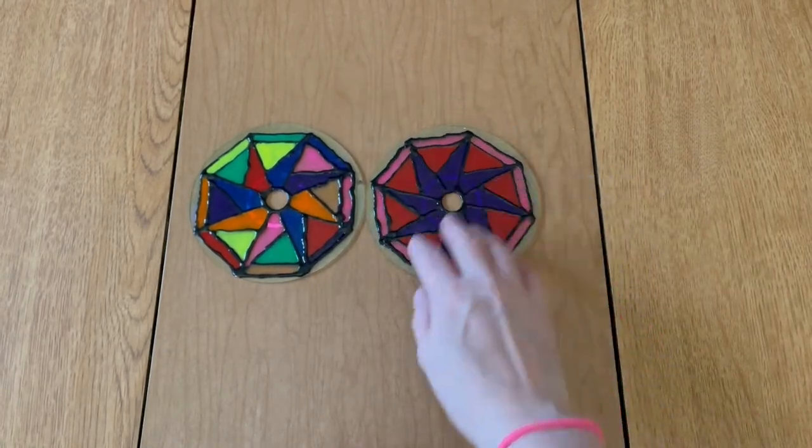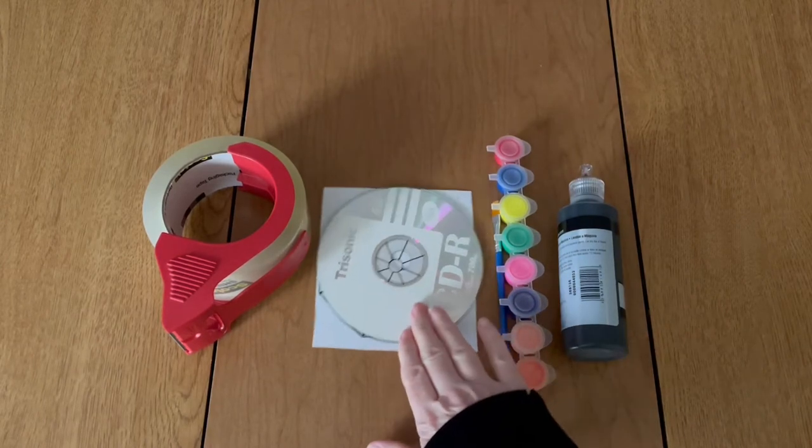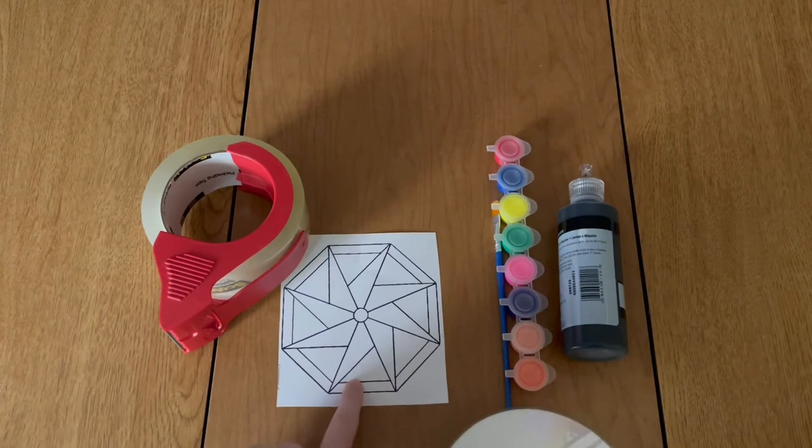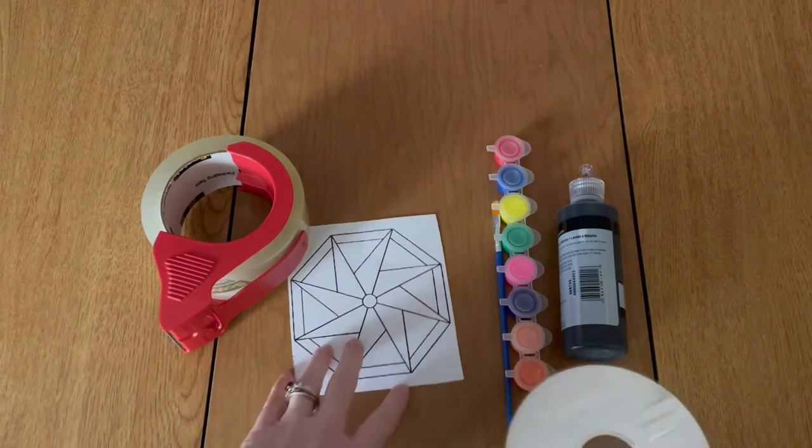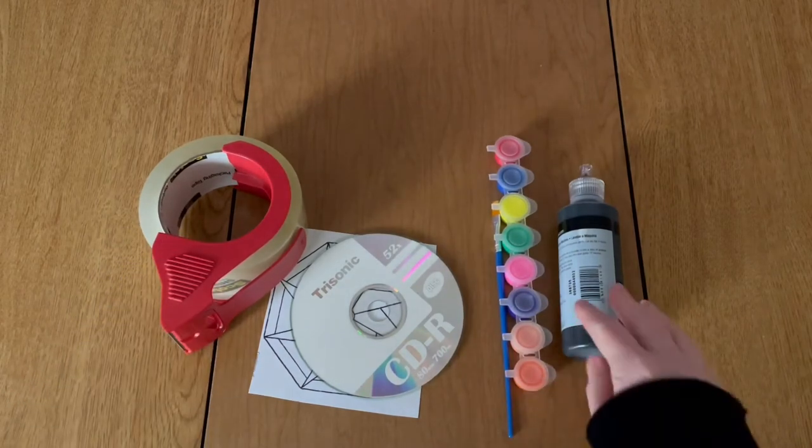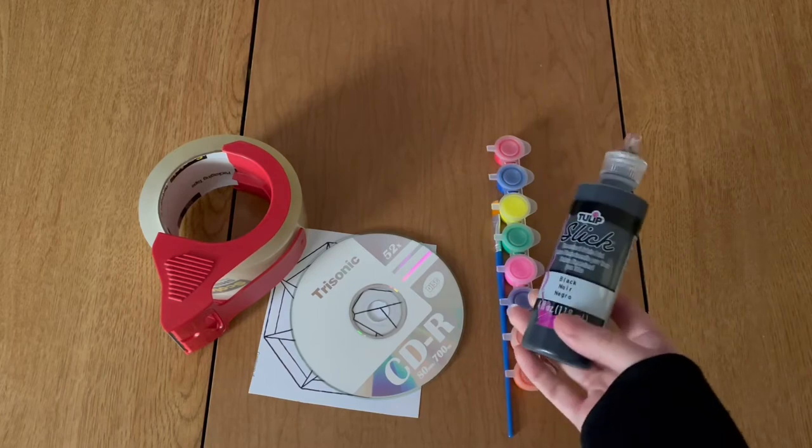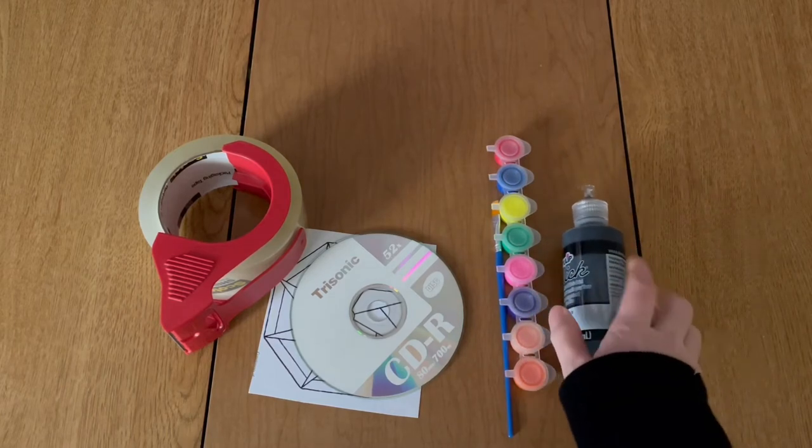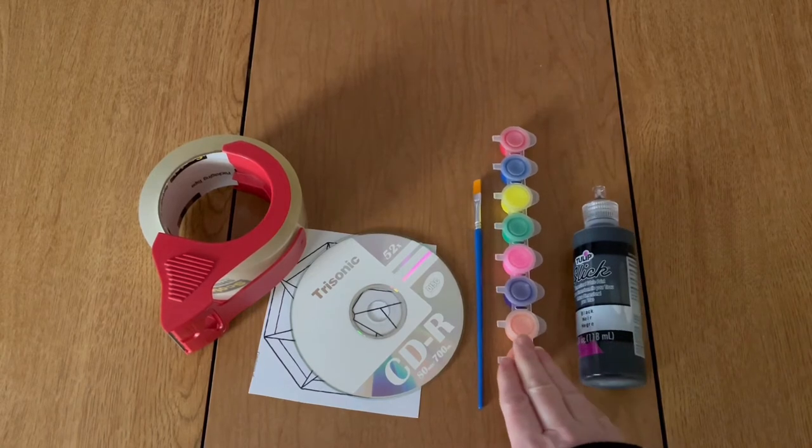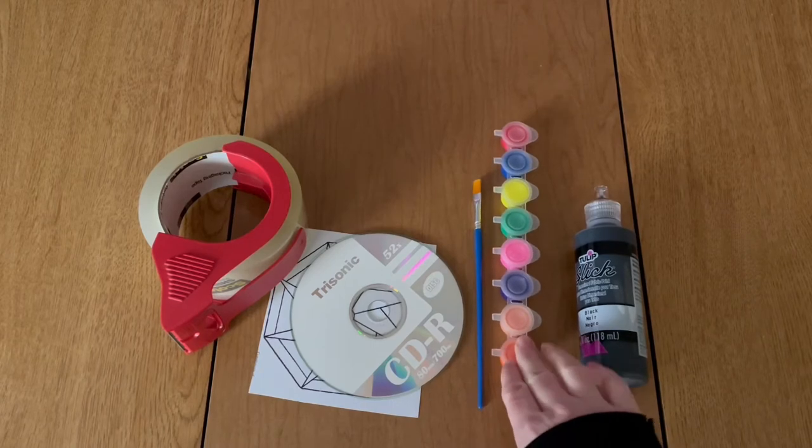So for today's craft, you're going to need an old CD, whatever pattern you want to use (you can do it freehand as well, I'm going to use a pattern), some packing tape, some black puffy paint (and if you don't have that you can actually use hot glue), a paintbrush, some sun catcher paint (and if you don't have that you can make your own using just clear glue and food coloring, it's basically the same thing).